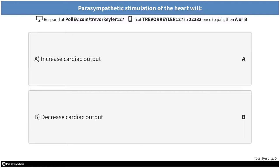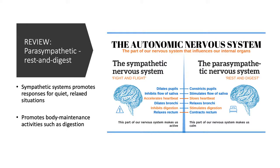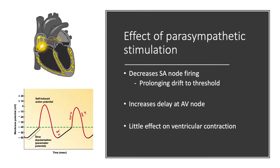Parasympathetic stimulation of the heart will decrease cardiac output. Recall from lecture 8: parasympathetic is associated with rest and digest — it promotes body maintenance activities such as digestion, constriction of pupils, saliva flow, and a slowing heartbeat. This is the part of the nervous system that makes us calm.